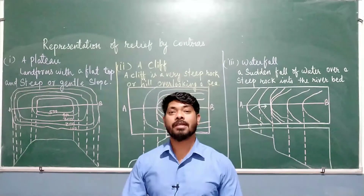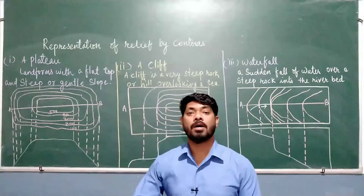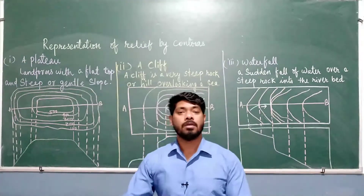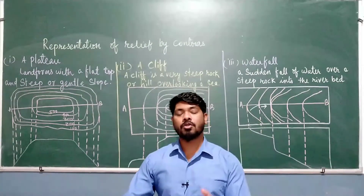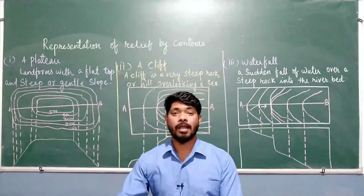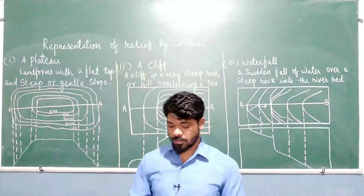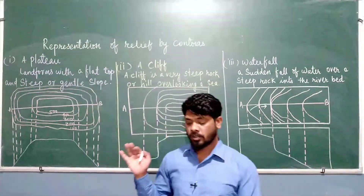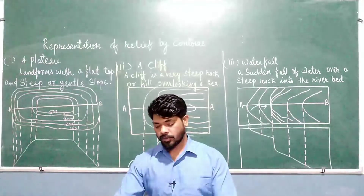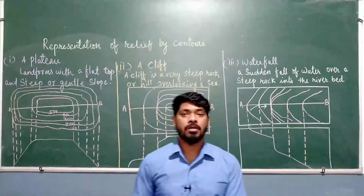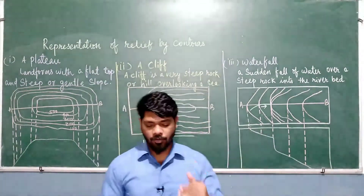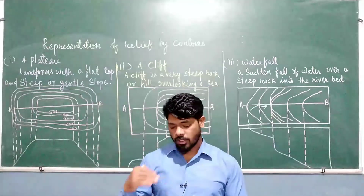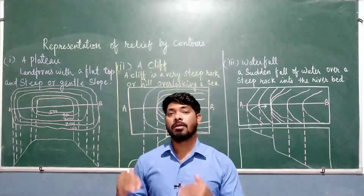Hello everyone, welcome once again to this online class. We are discussing the representation of geographical features. We have discussed gentle slope, steep slope, ridge and watershed, and the conical hill. In this video we shall discuss three relief features represented by contours: the first is a plateau, the second is a cliff, and the third is a waterfall — how they are shown on the topographical map with the help of contour lines.